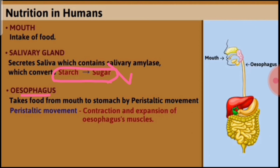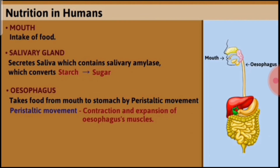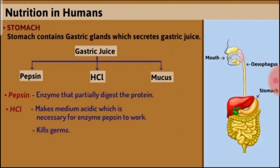The esophagus takes the food from the mouth into the stomach by peristaltic movement. Peristaltic movement is due to the contraction and expansion of the esophagus muscles. The food then enters into the stomach, where the next digestion is going to occur.